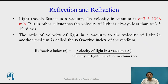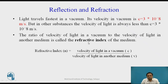As we know, light travels fastest in a vacuum. Its velocity in vacuum is 3 × 10⁸ meters per second. Whenever light travels through a denser medium like other substances, the velocity of light is always less than 3 × 10⁸ meters per second.